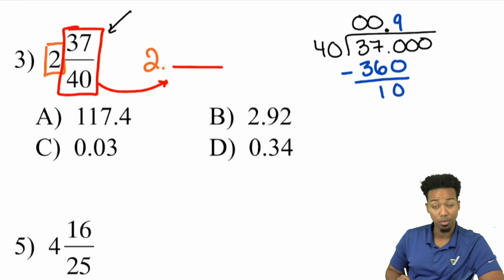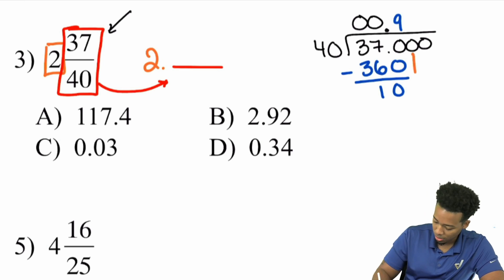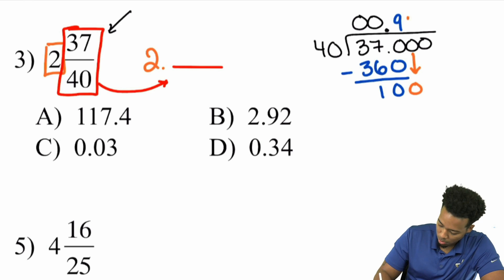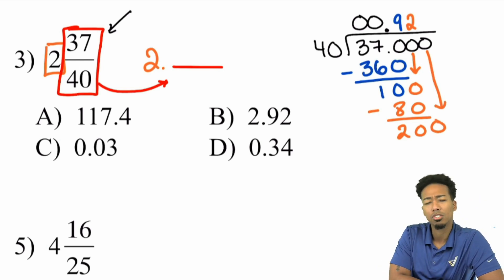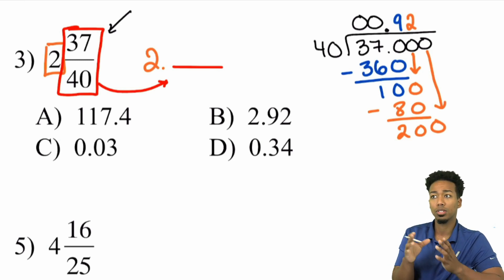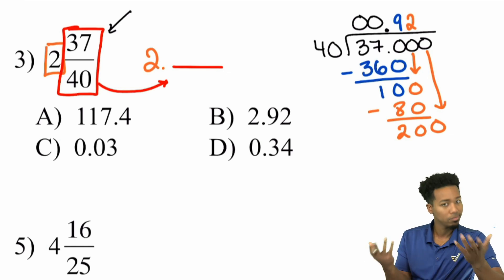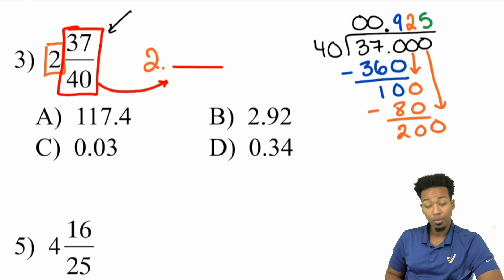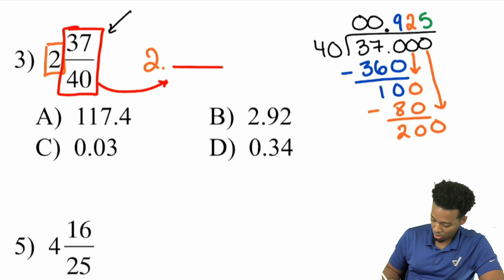So we subtracted 360, we get a 10 left over. Then what we'll do is we'll bring down the 0 and now we have 100. How many times does 40 go into 100? 40, 80, that's it, twice. So that'll be a 2 and we'll take away the 80. Next up, we have 20 remaining, but we bring down that 0. And so now we ask ourselves, how many times does 40 go into 200? Well, that's going to be five because 40 goes into 200. That's the same as four going into 20. That's five times.